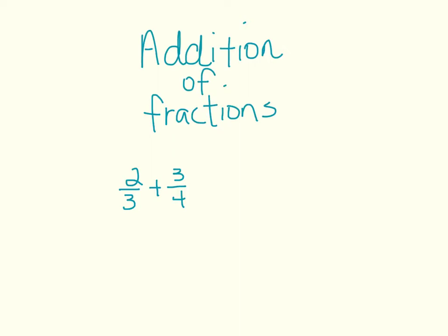When we add fractions, the denominators have to be the same. And once they are the same, all we do is add the numerators together. So if we look at our example, two-thirds plus three-fourths, we see that our denominators are different, and so we will have to find the least common denominator.